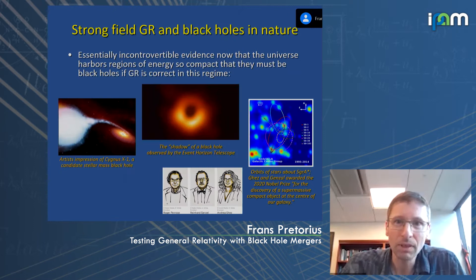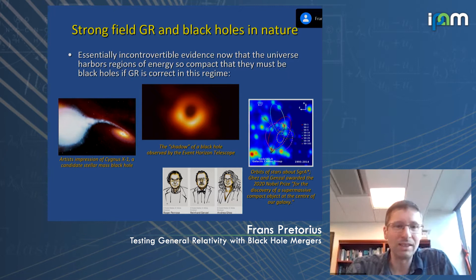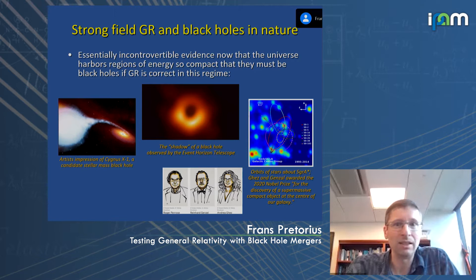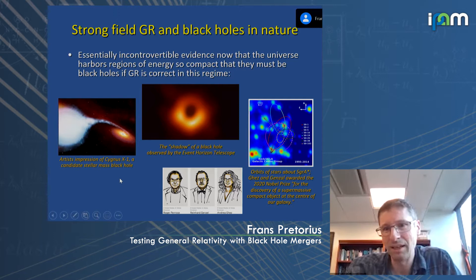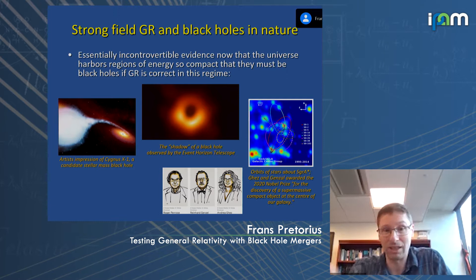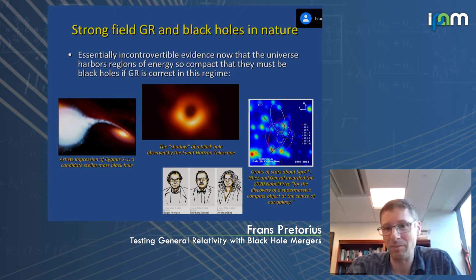Since essentially the 1970s, evidence has been building — and it's become almost incontrovertible today — that there are regions of our universe with ultra-compact, dark concentrations of energy so compact that if relativity is the correct description, there must be black holes. Starting with Cygnus X1 in the early 70s, and the orbits around Sagittarius A* as one of the prime examples gathered for decades by Genzel and Ghez's group. Last year they were co-awarded the Nobel Prize with Roger Penrose for their discovery of this ultra-compact object in the center of our galaxy.